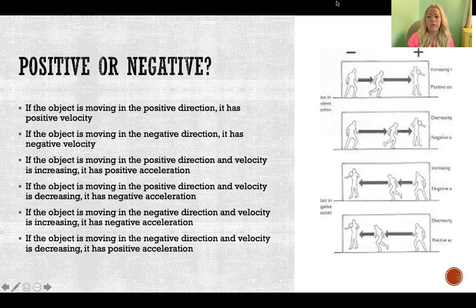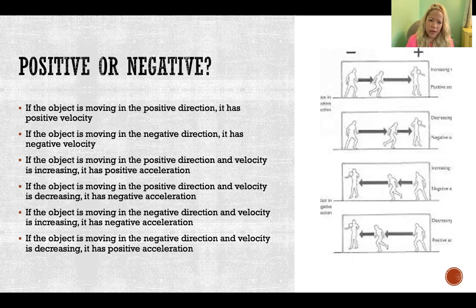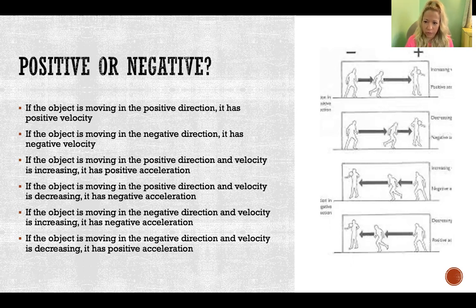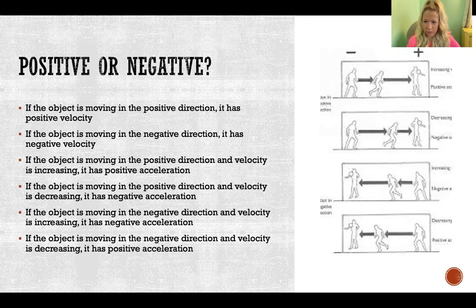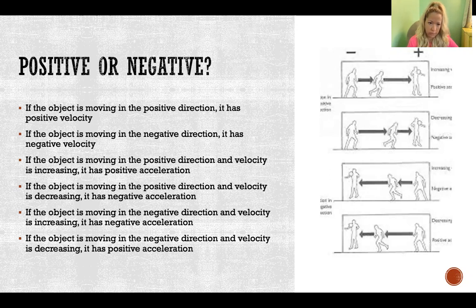So how do we tell if velocity or acceleration are positive or negative? My picture here looks a little blurry, but hopefully it will still illustrate the point. If an object is moving in the positive direction, it has positive velocity. Which way is positive or negative — I'll talk about that on the next slide, as sometimes that's contextual. But if the object is moving in the negative direction, it has negative velocity — even though movement is still occurring, the velocity is negative simply because of the direction of movement.